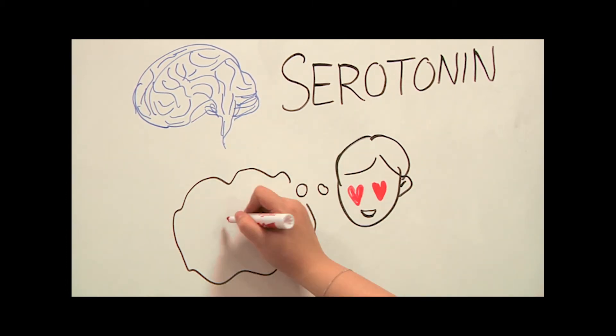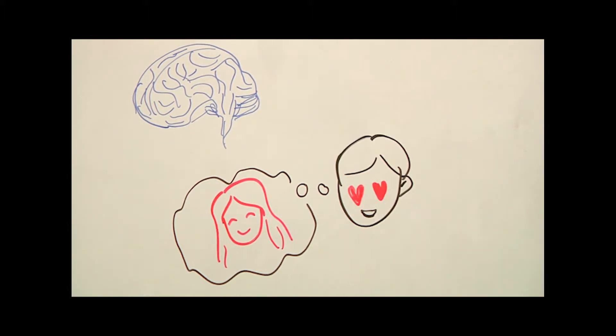Does love change the way you think? The brain mechanisms that cause you to constantly think about your lover were related to the brain mechanisms of obsessive compulsive disorder, OCD.